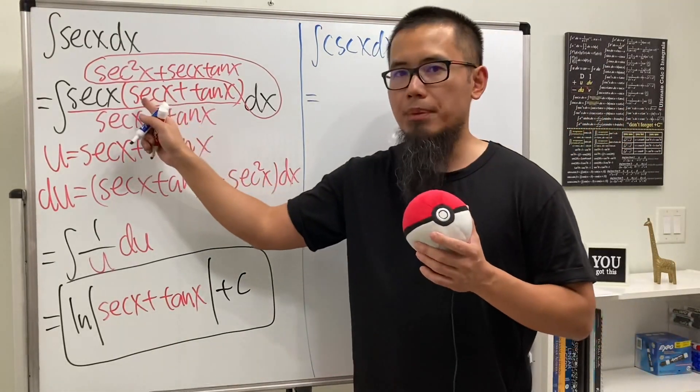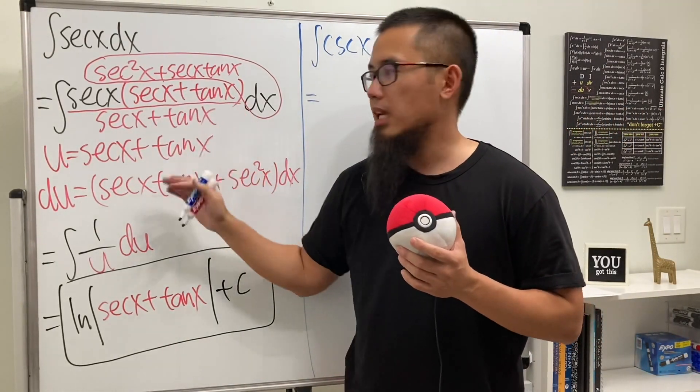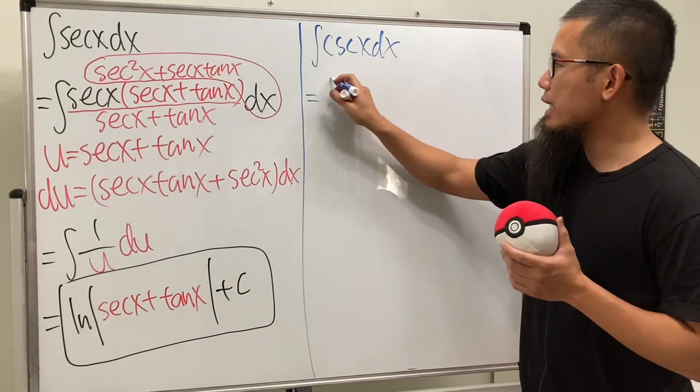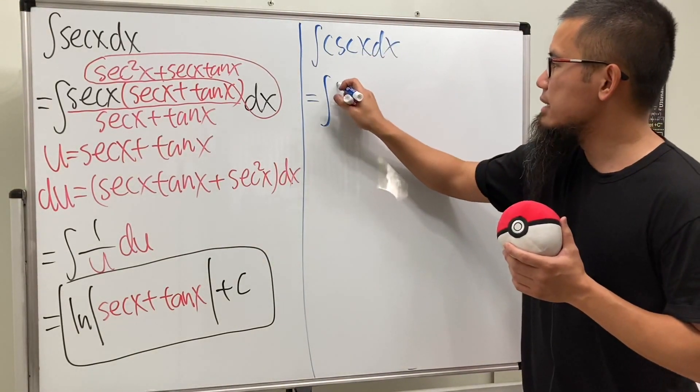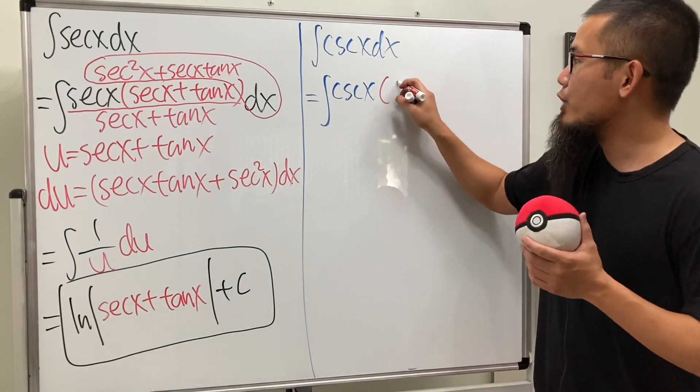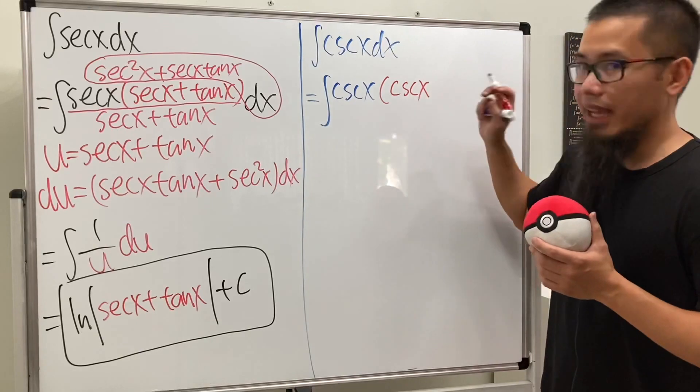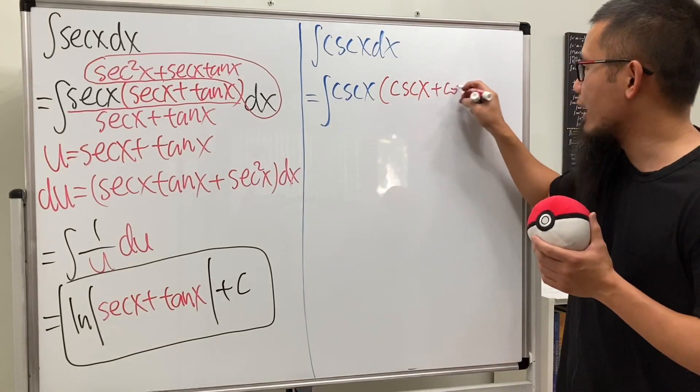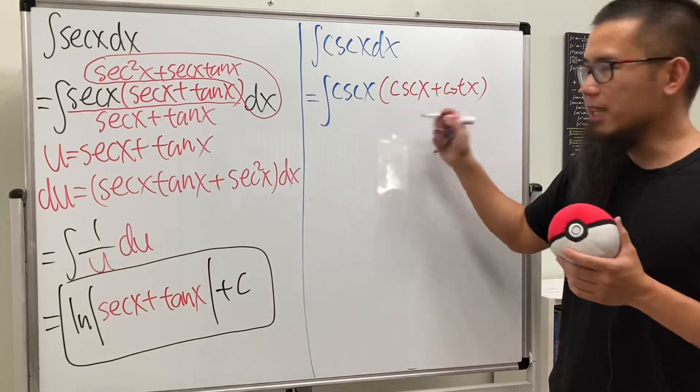Earlier we multiplied it by secant x plus tangent x and we divide it by that. So right here, wouldn't we just have to look at cosecant x and then multiply by cosecant x and then add the cotangent x, and divide it by that right away.